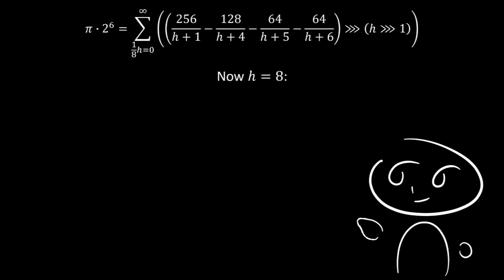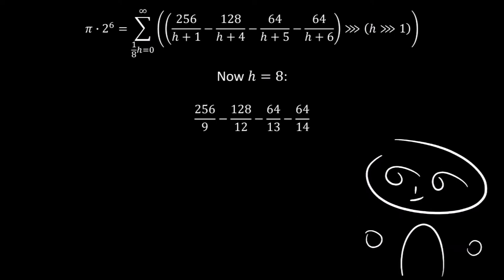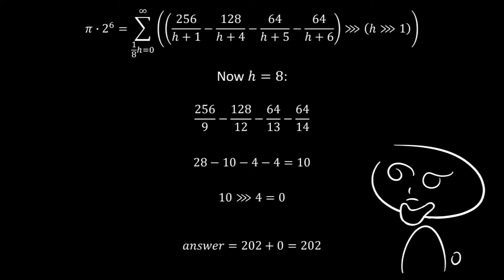Now we have h equal to 8. Remember that h increases by 8 each iteration. This gives us the fractions 256 divided by 9, minus 128 divided by 12, minus 64 divided by 13, minus 64 divided by 14. That then gives us 28 minus 10 minus 4 minus 4, which equals 10. We then right shift this h divided by 2 times, so we right shift the 10 four times, and this gives us 0. So the answer is then 202 plus 0, which gives us 202.